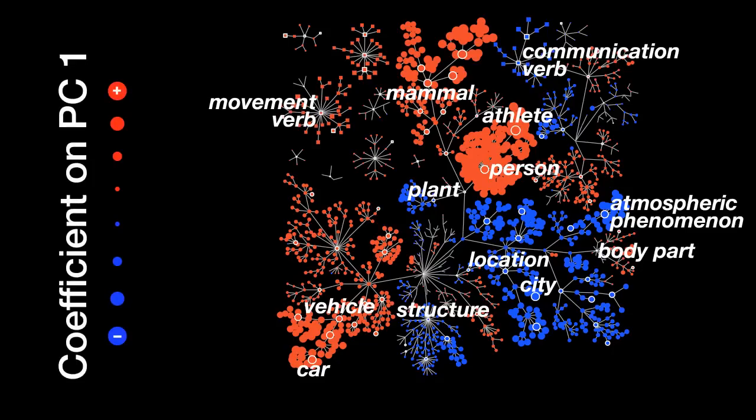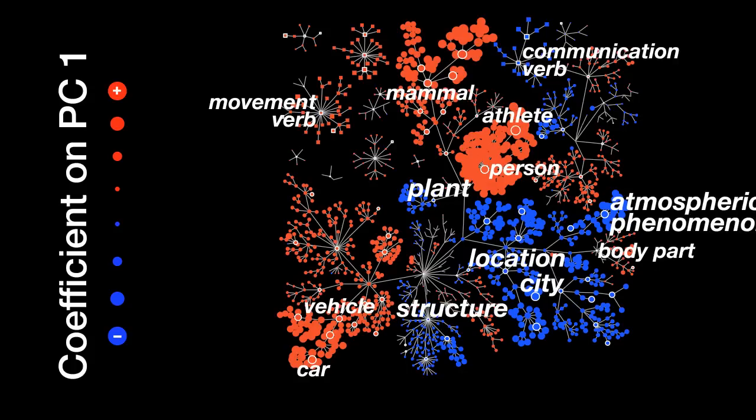Here we're showing the first shared semantic dimension. It seems to distinguish things that move, like people, animals, and vehicles, from things that don't, like buildings in the sky. This is not really surprising, since we know that bright, fast things just tend to elicit more activity in visual cortex.